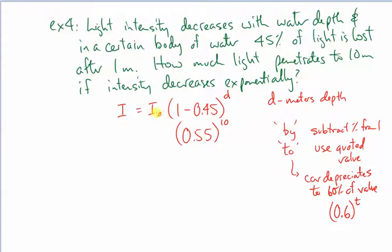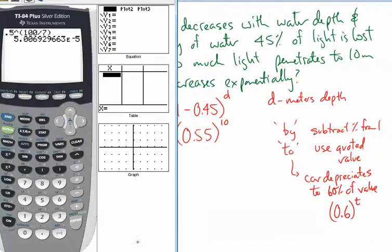Back to this problem. The initial intensity, we're not quoted any specific units, so let's talk about percentages. We have all of the light intensity initially at the surface. My intensity varies with depth, which in this case is 10. So I'm going to use my 100%, my 0.55, raise to exponent 10, and I will get 0.253.